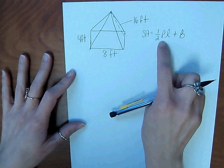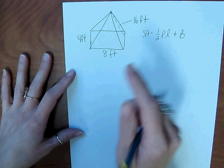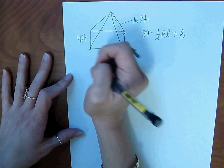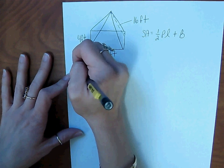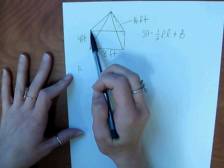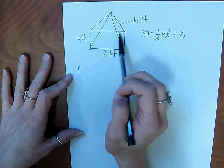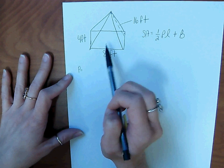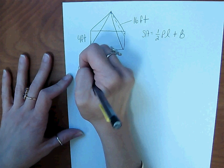So P, remember, is the perimeter of the base. Let's go ahead and figure that out. The base is a rectangle. So to find the perimeter, that would be 8 plus 4, 12. And then there's an 8 and a 4 on this side. So another 12. So the perimeter is 24 feet.